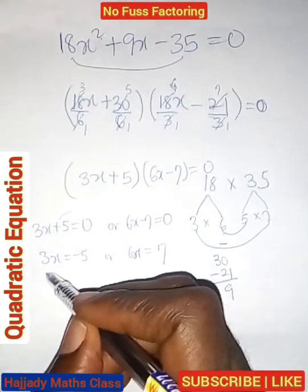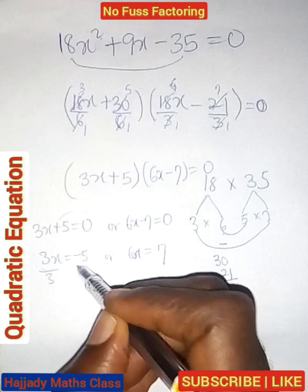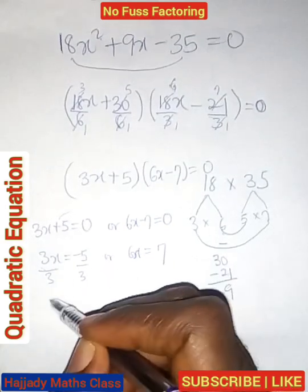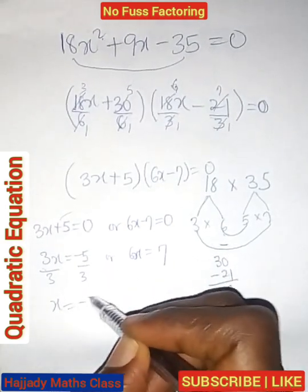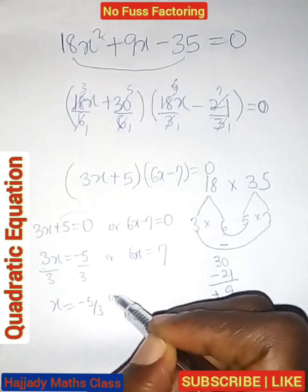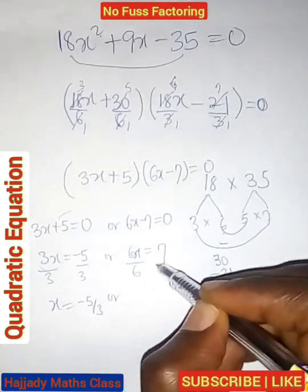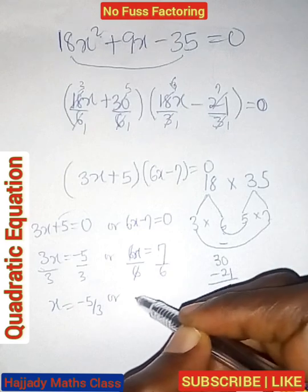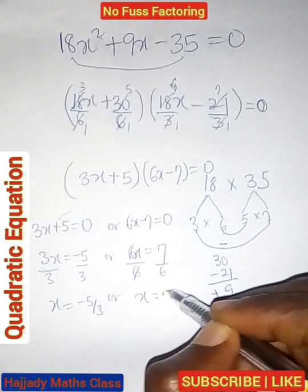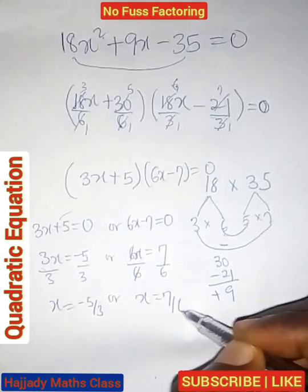Dividing both of us by the coefficient of x, which is 3, we have x equals minus 5 over 3 or over 6, we have x equals 7 over 6.